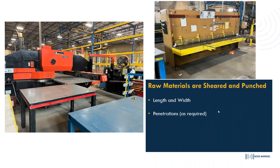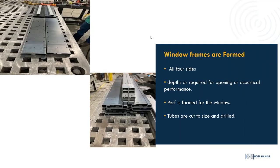Raw materials are sheared — some now go through our new lasering process — but most commonly they're sheared to the throat dimension of the window, and penetrations are made in the window frame for attachment points. Window frames are then formed — as shown here on the left — representing the second stage of manufacturing where all four sides are formed. Depth is determined by the required opening or acoustical performance, ranging from 8-inch to 14-inch walls depending on what the customer needs.